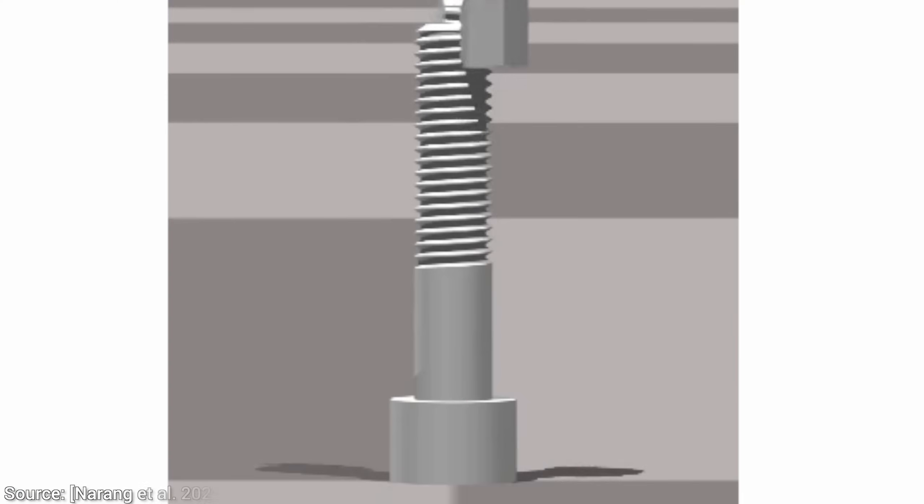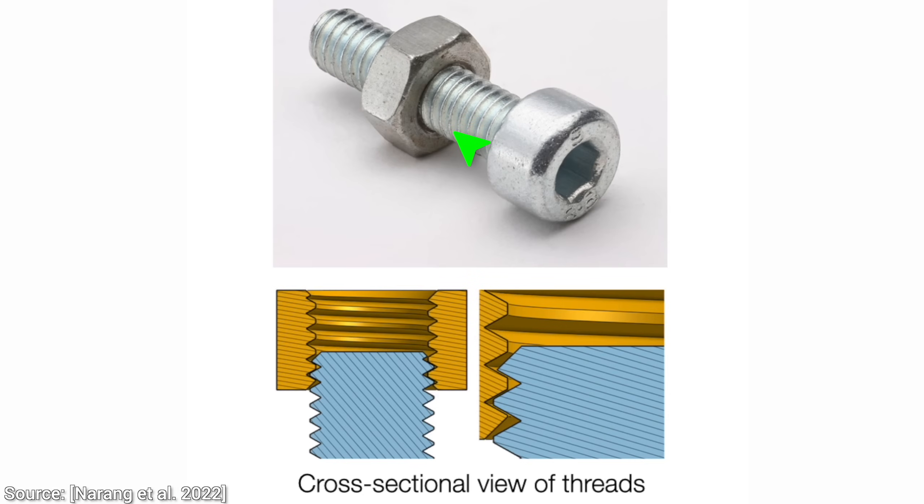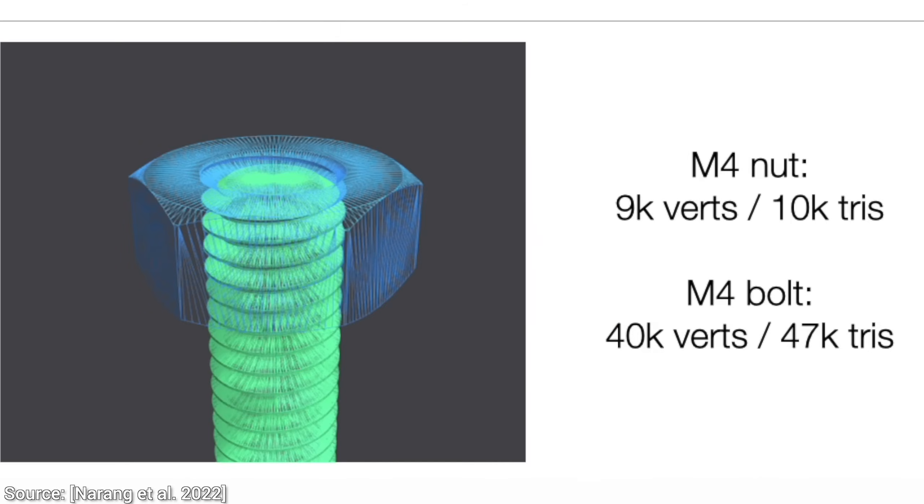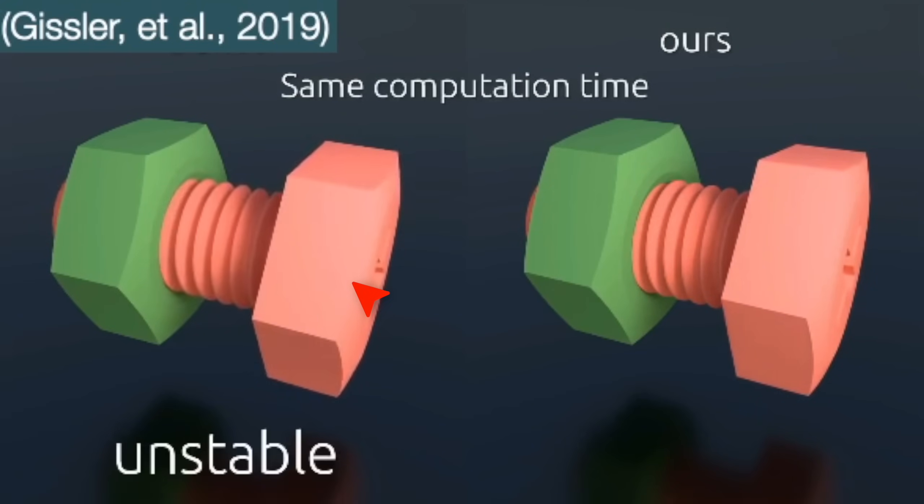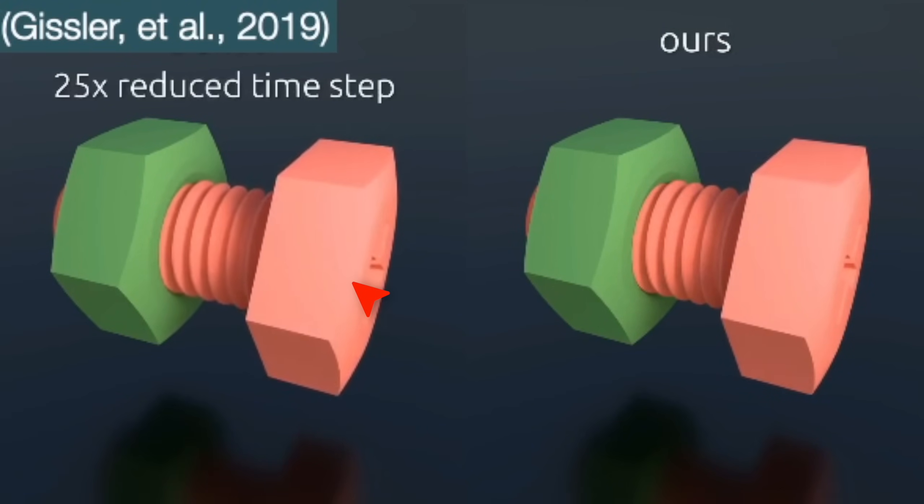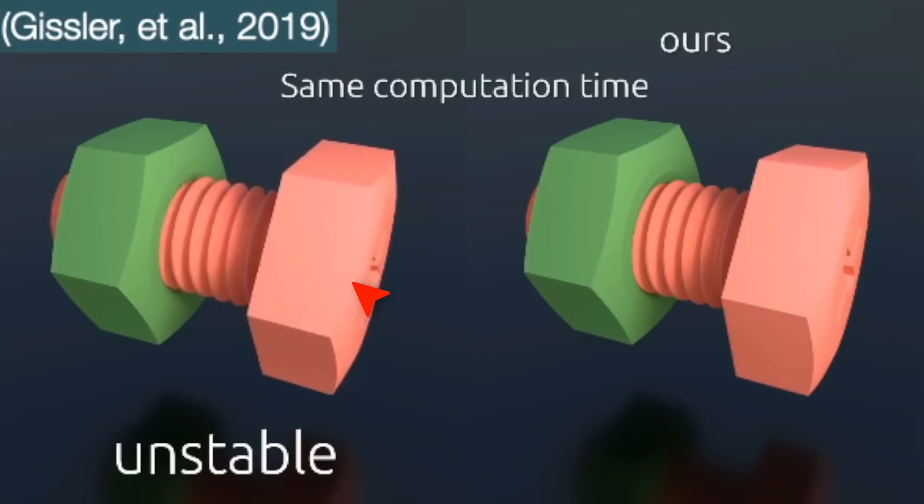If we try to simulate just one nut and bolt to be able to screw it in, the resolution of this geometry in the simulation has to be so fine. Just one bolt would need about 50,000 elements colliding with each other, and unfortunately, it typically looks like this. Uh oh, not like reality at all. So, no virtual factories for us, I guess, right? Well, don't despair.